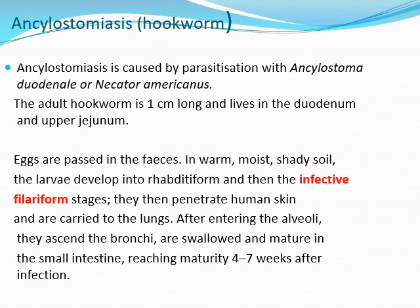The eggs are passed in the feces in warm, moist, shady soil. The larvae will develop into the rhabditiform and then the infective filariform larvae. They then penetrate human skin and are carried via blood to the lungs. After entering the alveoli, they ascend the bronchi and are then swallowed again, maturing in the small intestine reaching adult stage about 4-7 weeks after infection.